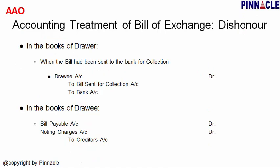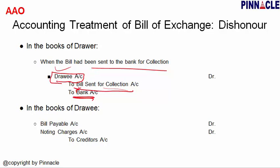When the bill had been sent to the bank for collection and is dishonored: the Bill Sent to Bank for Collection Account is credited to cancel it since there is no value. The bank pays the noting charges and debits the drawer's bank account. The drawee again becomes a debtor, so the drawee's account is debited.